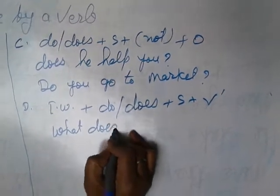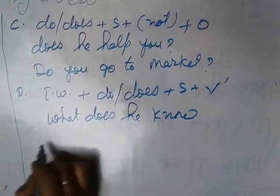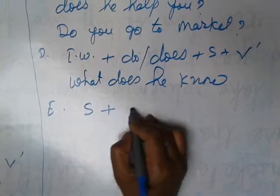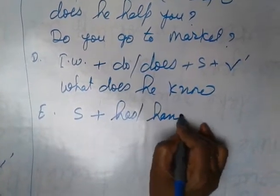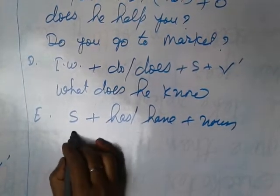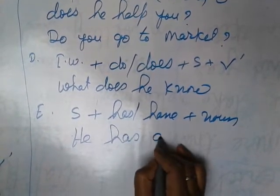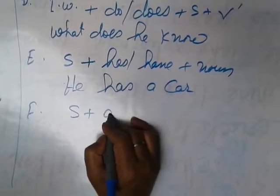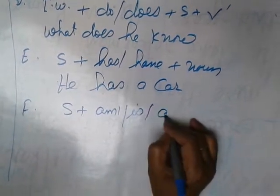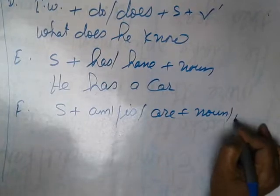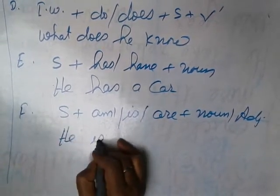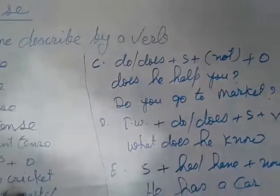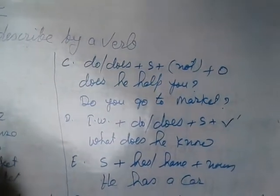Another structure is subject plus has/have plus noun. He has a car. And next structure: subject plus am/is/are, noun or adjective. He is a doctor. You have to learn all this structure and frame sentences according to your own.